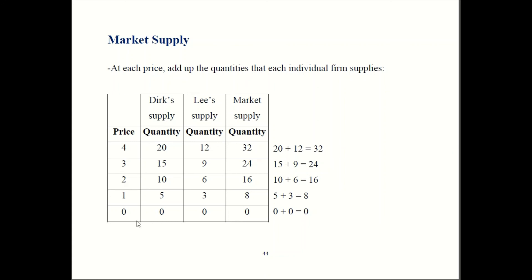When the price is zero, they both produce nothing because there's no incentive to do anything. So the market supply is zero. If the price is one, then Dirk produces five, and Lee produces three. Overall, market supply is going to be five plus three, which is eight. When price is two, Dirk makes 10, and Lee makes six. So market supply is going to be 16. For price is three, 15 and nine is 24. Lastly, when price is four, Dirk makes 20, and Lee makes 12. So the market supply is 32.